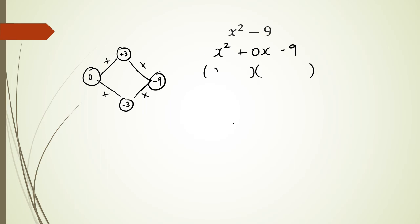So you're looking at positive 3 and minus 3. So in other words, when I factorize this, I'm going to have this as x plus 3 and x minus 3.